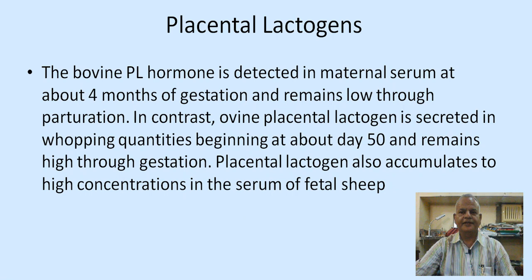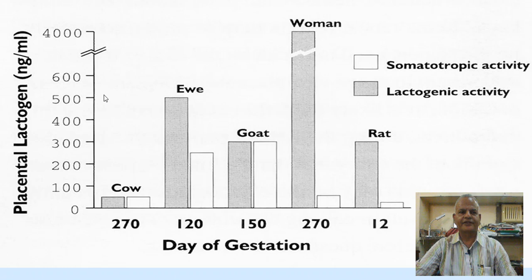The bovine placental lactogen hormone is detected in maternal serum at about four months of gestation and remains low through parturition. In contrast, the ovine placental lactogen is secreted in large quantities beginning at about day 50 and remains high through gestation. Placental lactogen also accumulates to high concentrations in the serum of fetal sheep. This chart shows placental lactogen levels in cattle, ewe, goat, women, and rat — with somatotropic activity in goat and ewe, and primarily lactogenic activity.